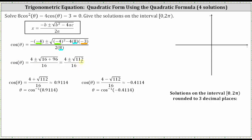We have two values here. First, we solve cosine theta equals the quantity four plus the square root of 112 divided by 16, where this value is approximately 0.9114. We also have to solve cosine theta equals the quantity four minus the square root of 112 divided by 16, where this value is approximately negative 0.4114. To solve these equations for theta, we take the inverse cosine of both sides.